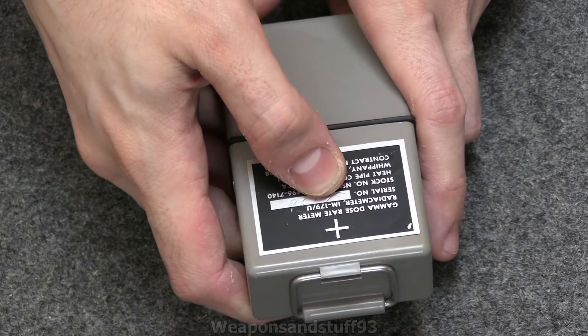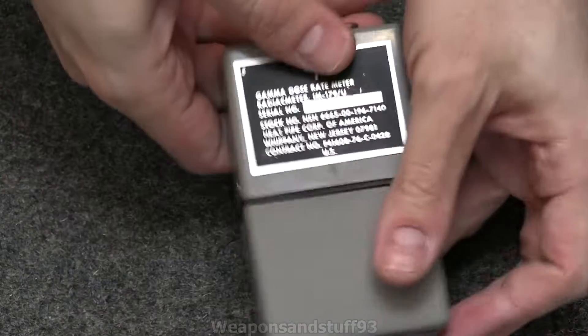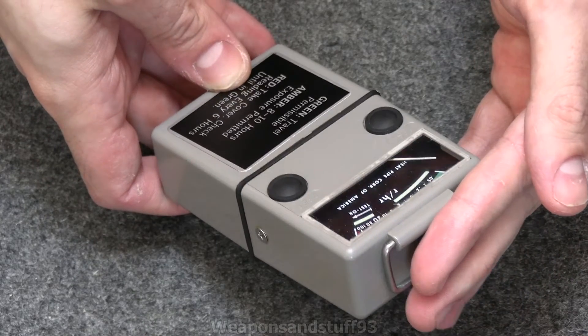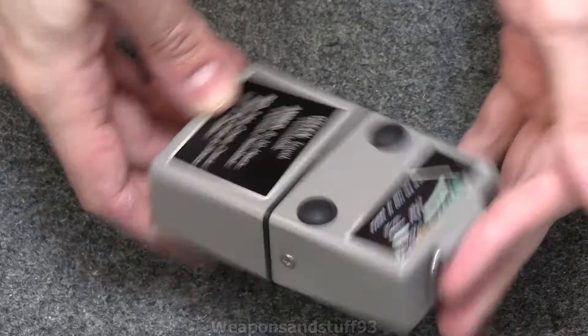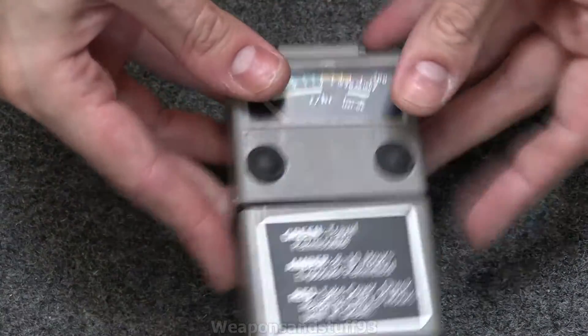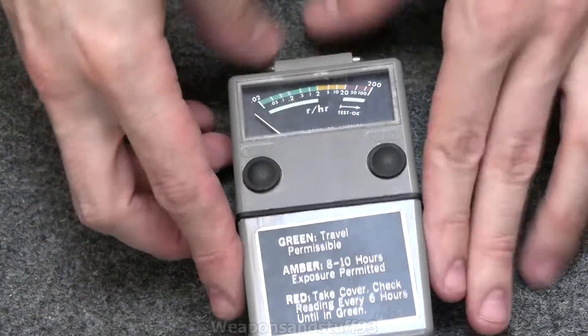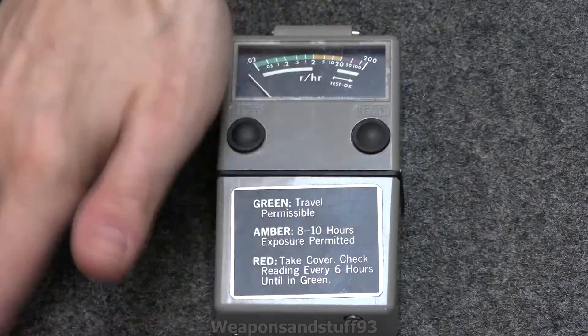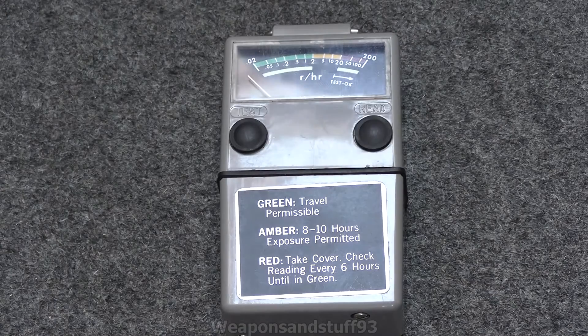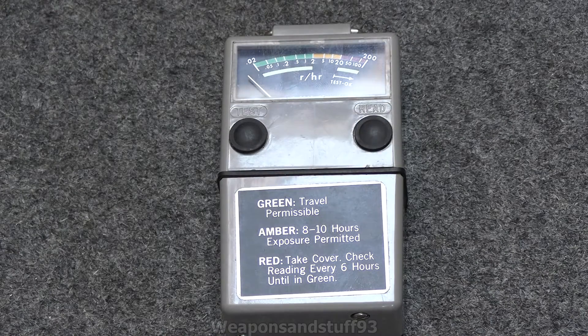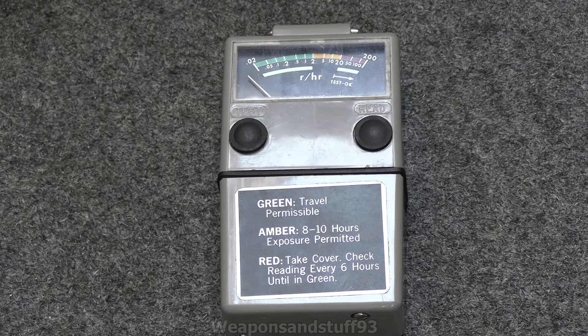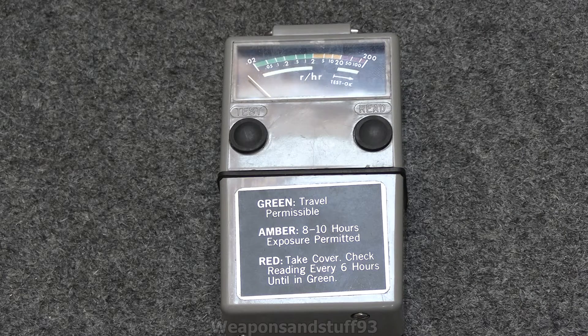So its actual name is the IM179U. This particular model was built by the Heat Pipe Corporation of America based in New Jersey, but I think a few different companies like Victorine and others made these. These are really nifty small things, and if you compare the size to my hand, I didn't even realize it was going to be this small until I got it. This was, I think, made in the 1960s era.